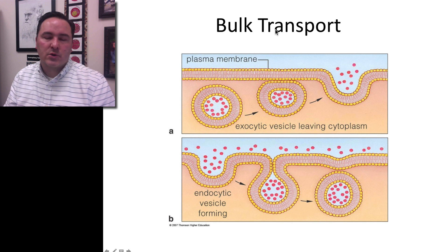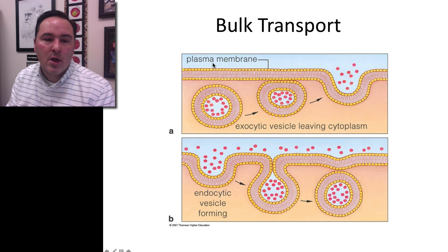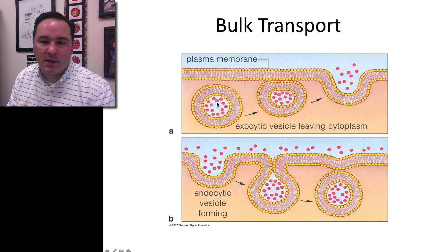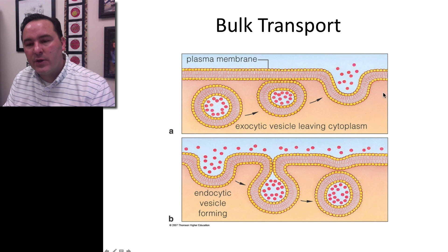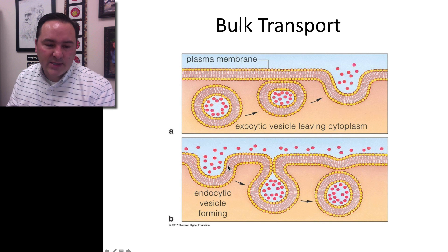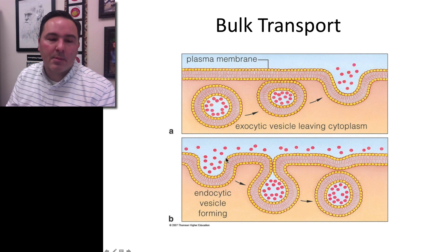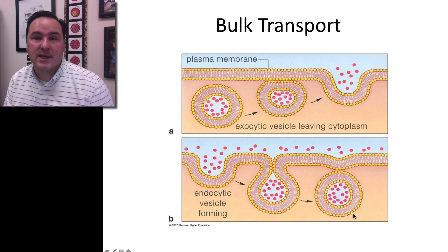I also want to talk about the last type of transportation that can happen at a cellular level. If you want to move a bunch of molecules outside of the cell all at once, you can form a vesicle, and then the vesicle fuses with the plasma membrane and all of these molecules can then be released outside of the cell. Likewise, you can also gather up lots of molecules that are on the outside of the cell, put them into a vesicle, bring them into the cell, and then process them.